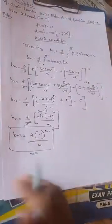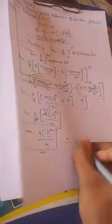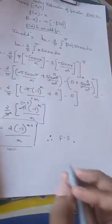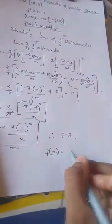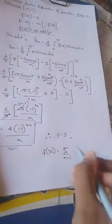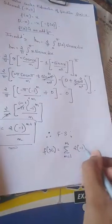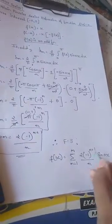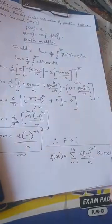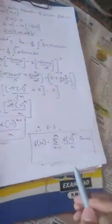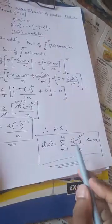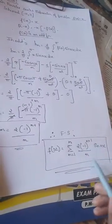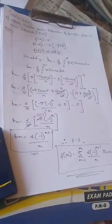Now let's write the Fourier series. The Fourier series becomes: f(x) equals summation from n equals 1 to infinity of minus 2 times minus 1 to the power n plus 1 over n, times sin(nx). Substituting the coefficient bn into the Fourier series, the final result is f(x) equals summation from n equals 1 to infinity of 2 times minus 1 to the power n plus 1 over n, times sin(nx). That's all — hope you have understood this.